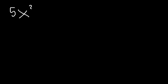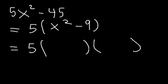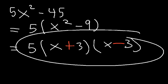Try this one: 5x squared minus 45. The first thing we should do is take out the GCF, which is 5. 5x squared divided by 5 is x squared, and negative 45 divided by 5 is negative 9. So here we have the difference of perfect squares. The square root of x squared is x, and the square root of 9 is 3, giving us 5 times x plus 3 times x minus 3.